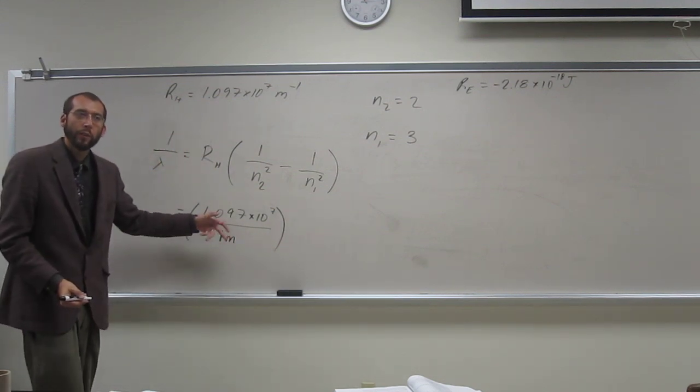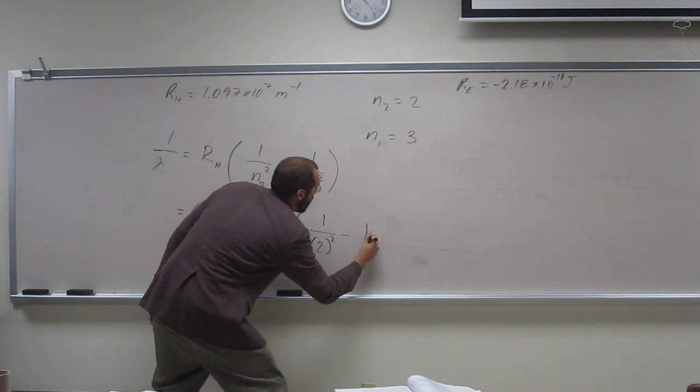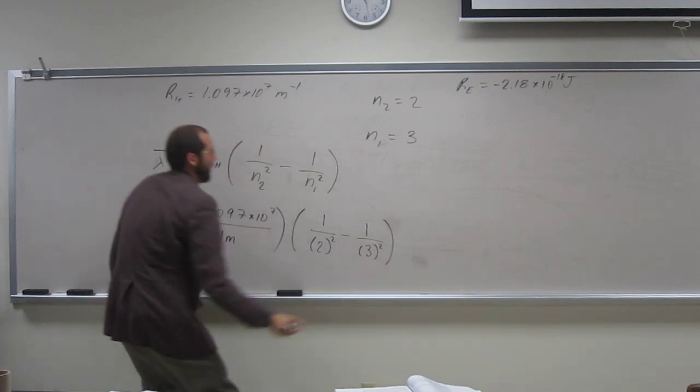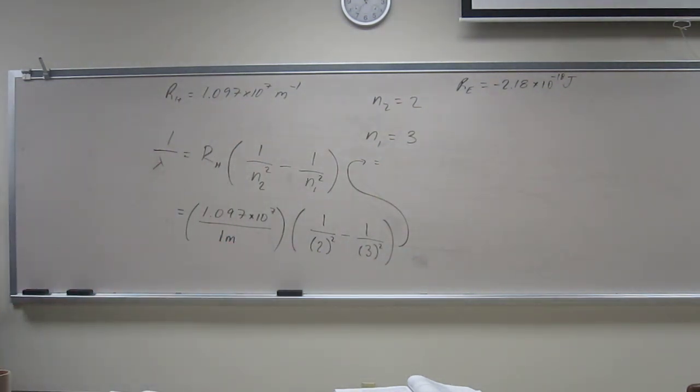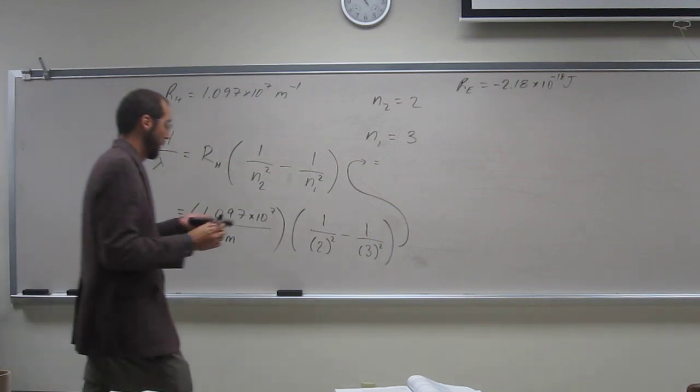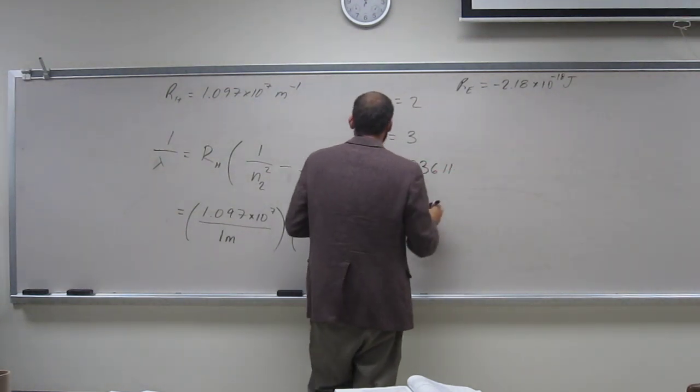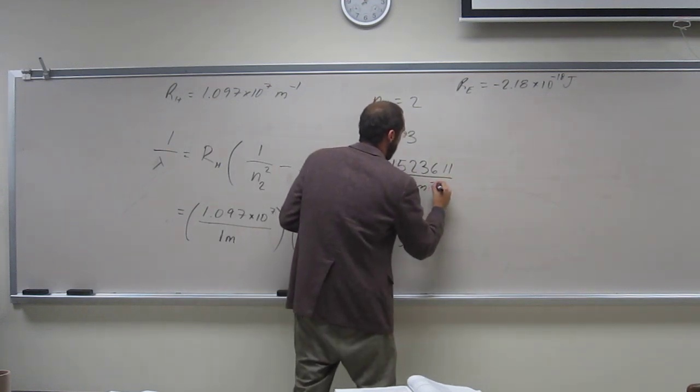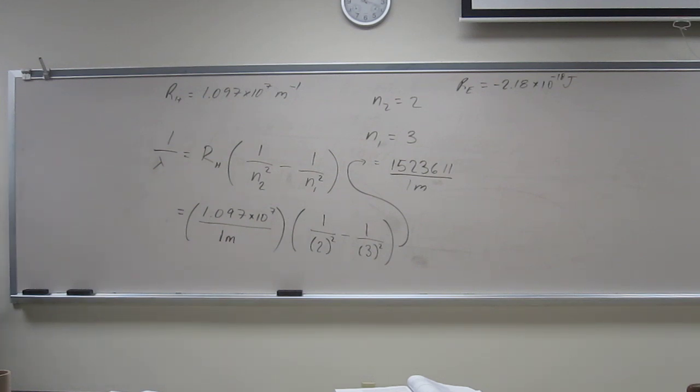So, like that, right? If you want to flip it now, you can. You don't have to. So, 1 divided by 4 minus 1 divided by 9 times 1.097... So, I'm just going to write this whole number up, 1.5236111, for right now, per meter. So, frequency, we'll keep it in meters. Okay.